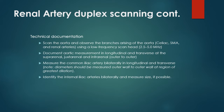When scanning the renal artery, there are protocols to follow. You want to scan the aorta and observe the branches arising off the aorta — your celiac artery, your superior mesenteric artery — and then get to your renal arteries. Use a low-frequency transducer. Document the aortic measurement in longitudinal and transverse at the suprarenal, juxtarenal, and infrarenal levels, measuring outer wall to outer wall. Measure the common iliac artery bilaterally, and identify your internal iliac arteries bilaterally and measure if possible.